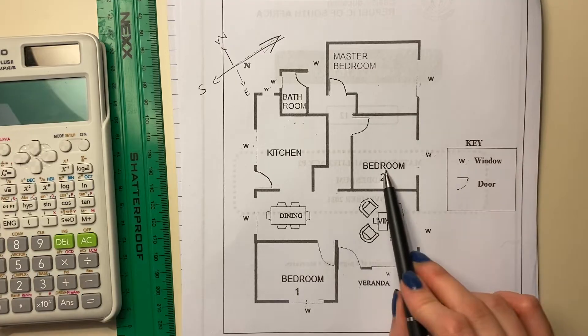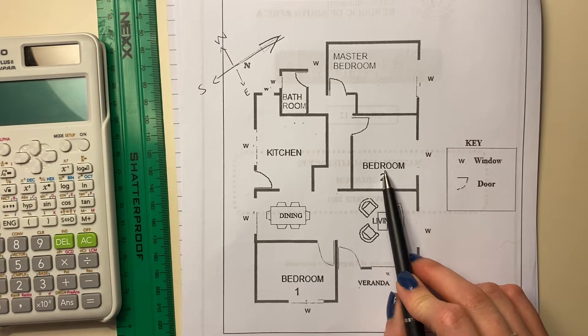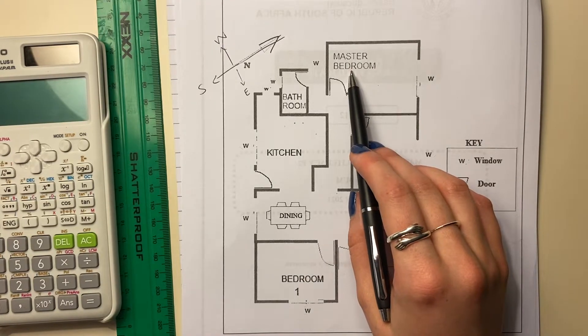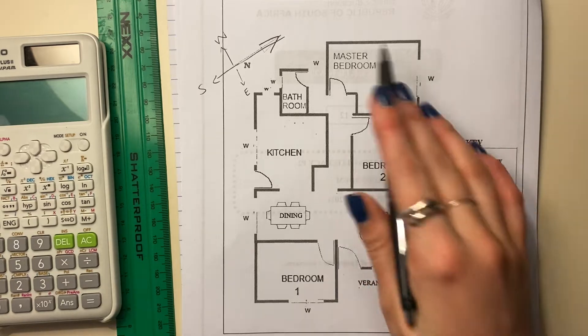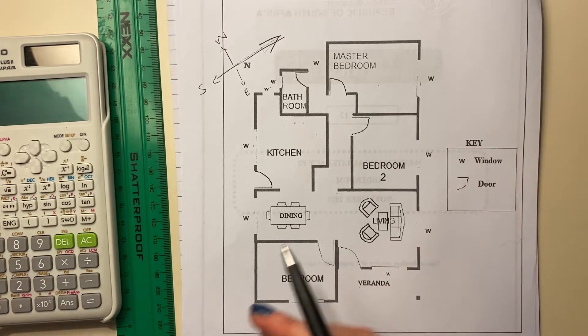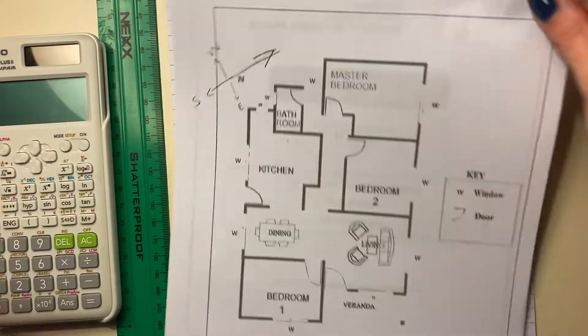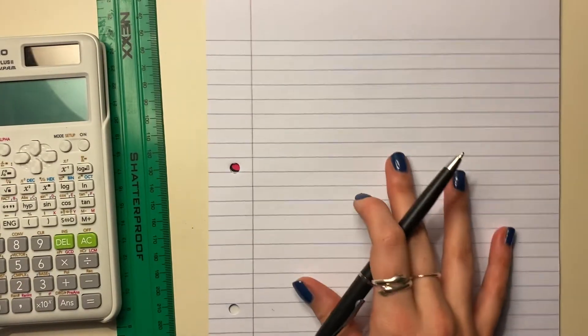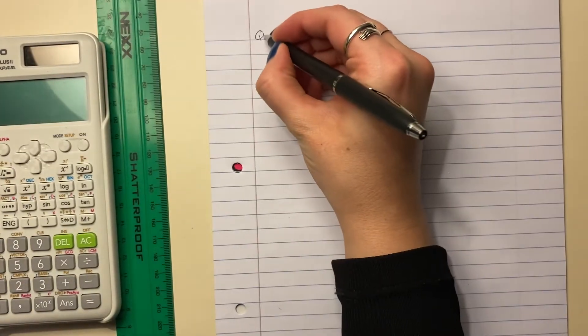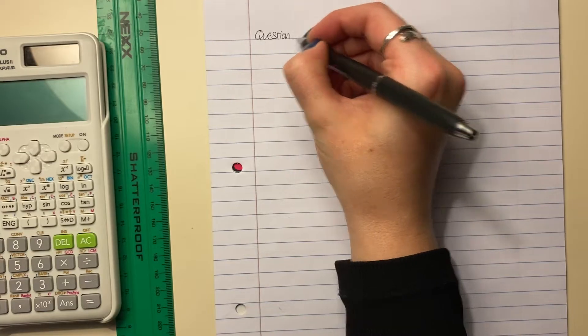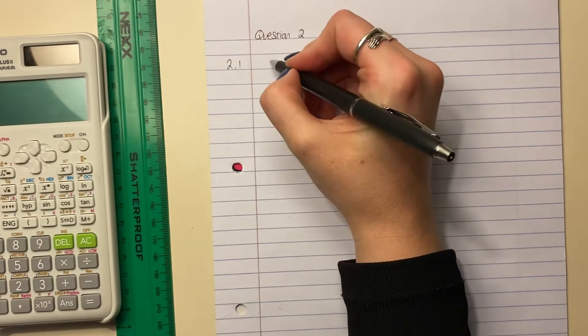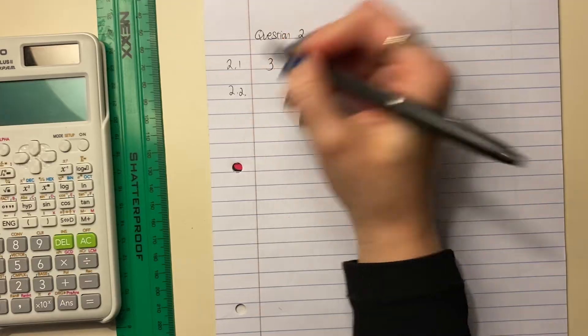So we have one bedroom, two bedrooms. And this is where students want to stop. But look, there's a master bedroom as well. So actually, there's three bedrooms. Master bedroom meaning basically the main bedroom. It's generally where the owners of the house stay. So let's write this down. Question 2, 2.1. And we say there are three bedrooms.